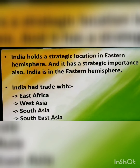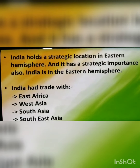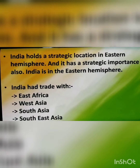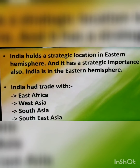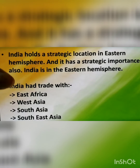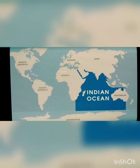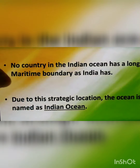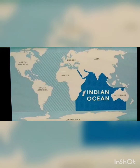India holds a strategic location in the Eastern Hemisphere. Because of this strategic location, India can trade with multiple countries such as East Africa, West Asia, South Asia, and South East Asia. No country in the Indian Ocean has as long a maritime boundary as India has, and because of this, that ocean is named the Indian Ocean. As you can see, the blue highlighted part is the Indian Ocean, which shares its boundary with our country.